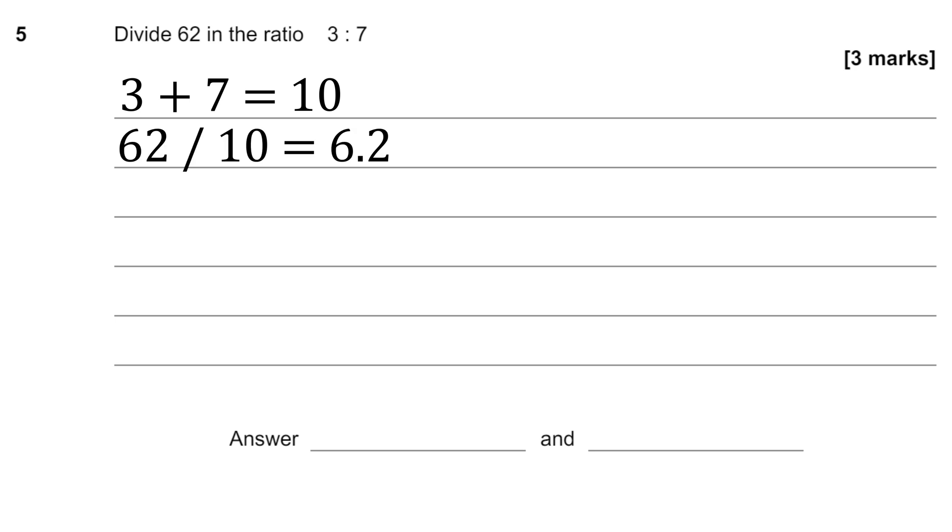So if we take 62 and divide it by 10, that's going to be equal to 6.2, and we know we're going to be working with 10 lots of 6.2, and now we just need to separate them into 3 lots of 6.2 and 7 lots of 6.2.